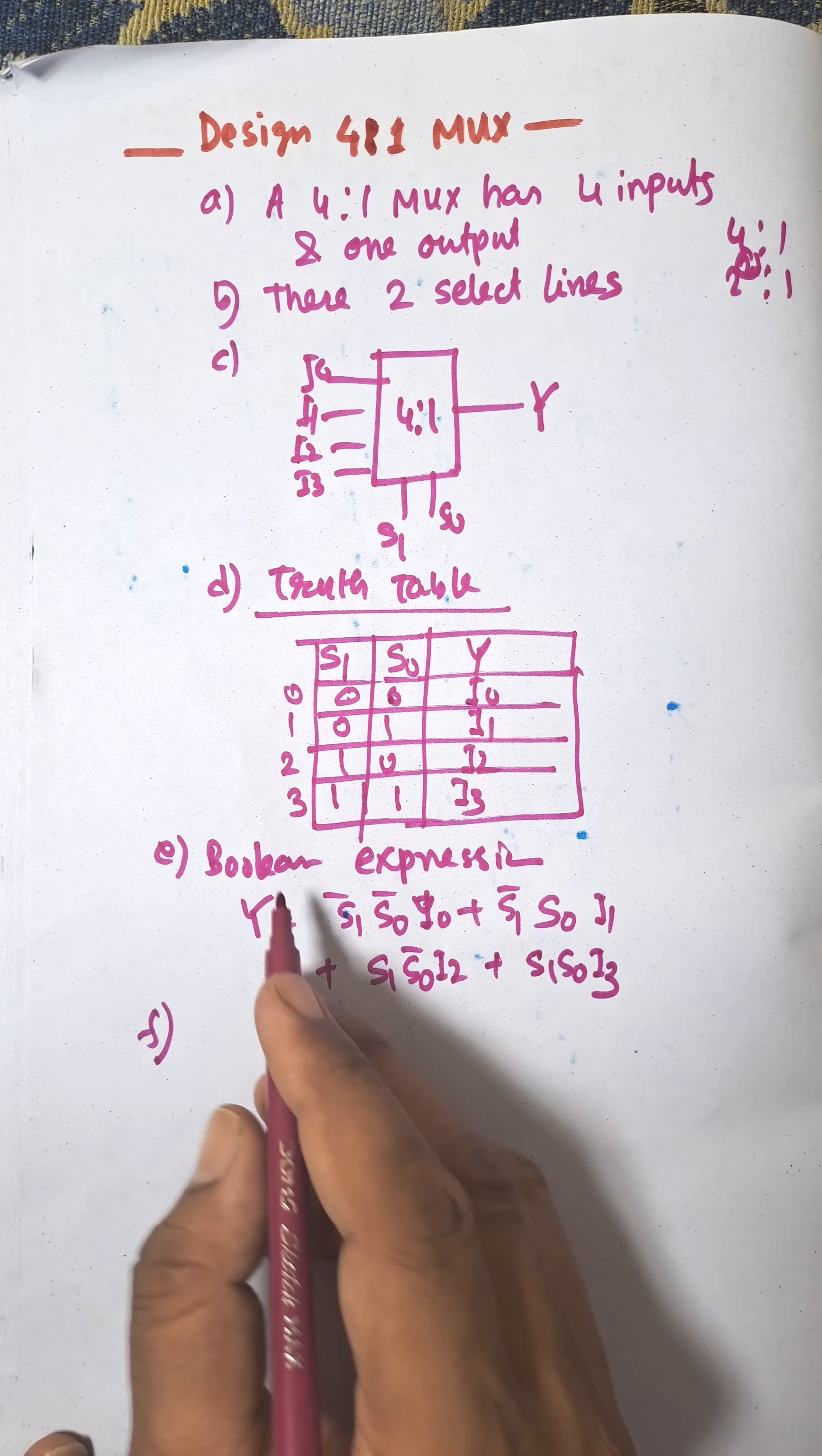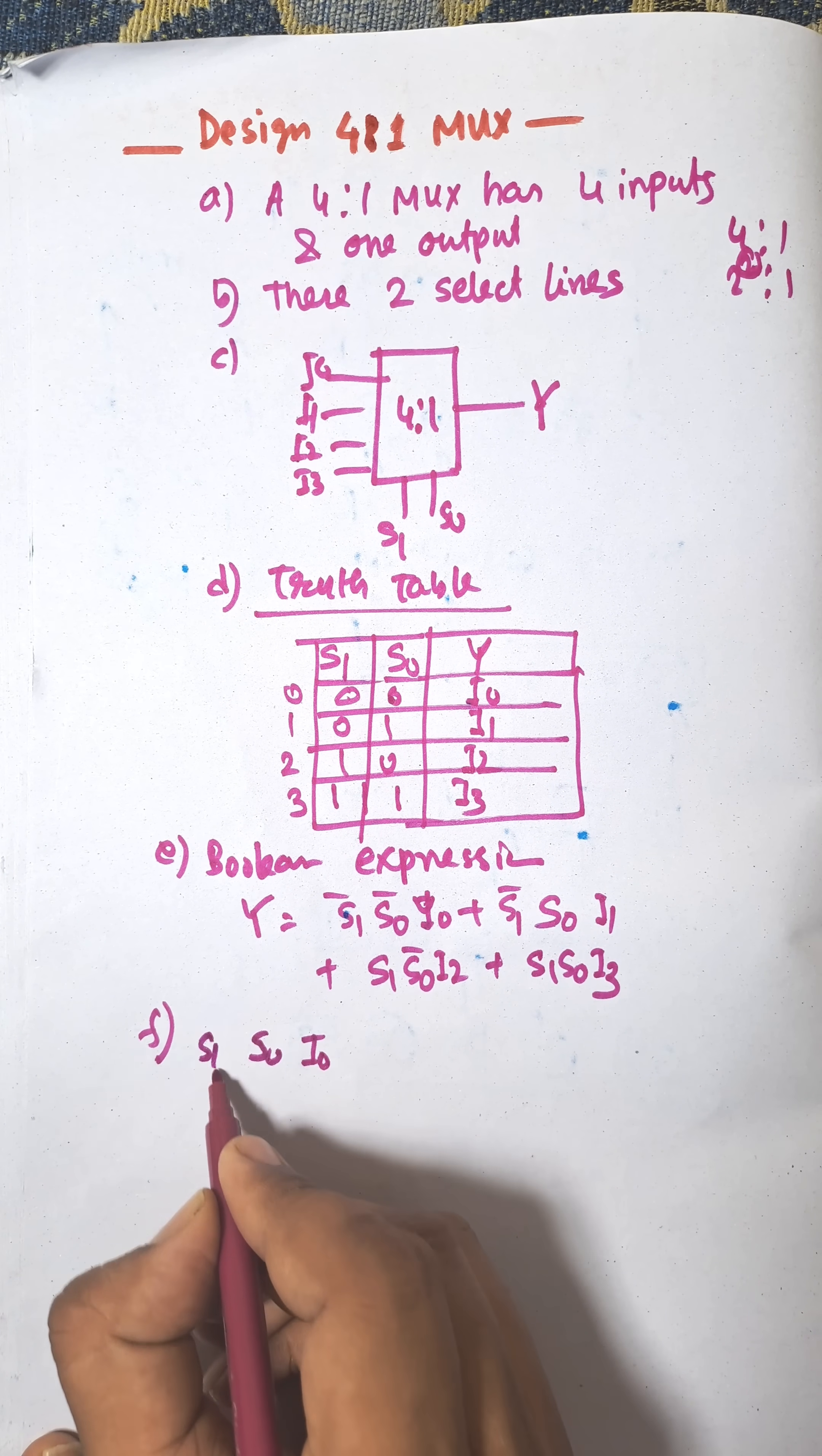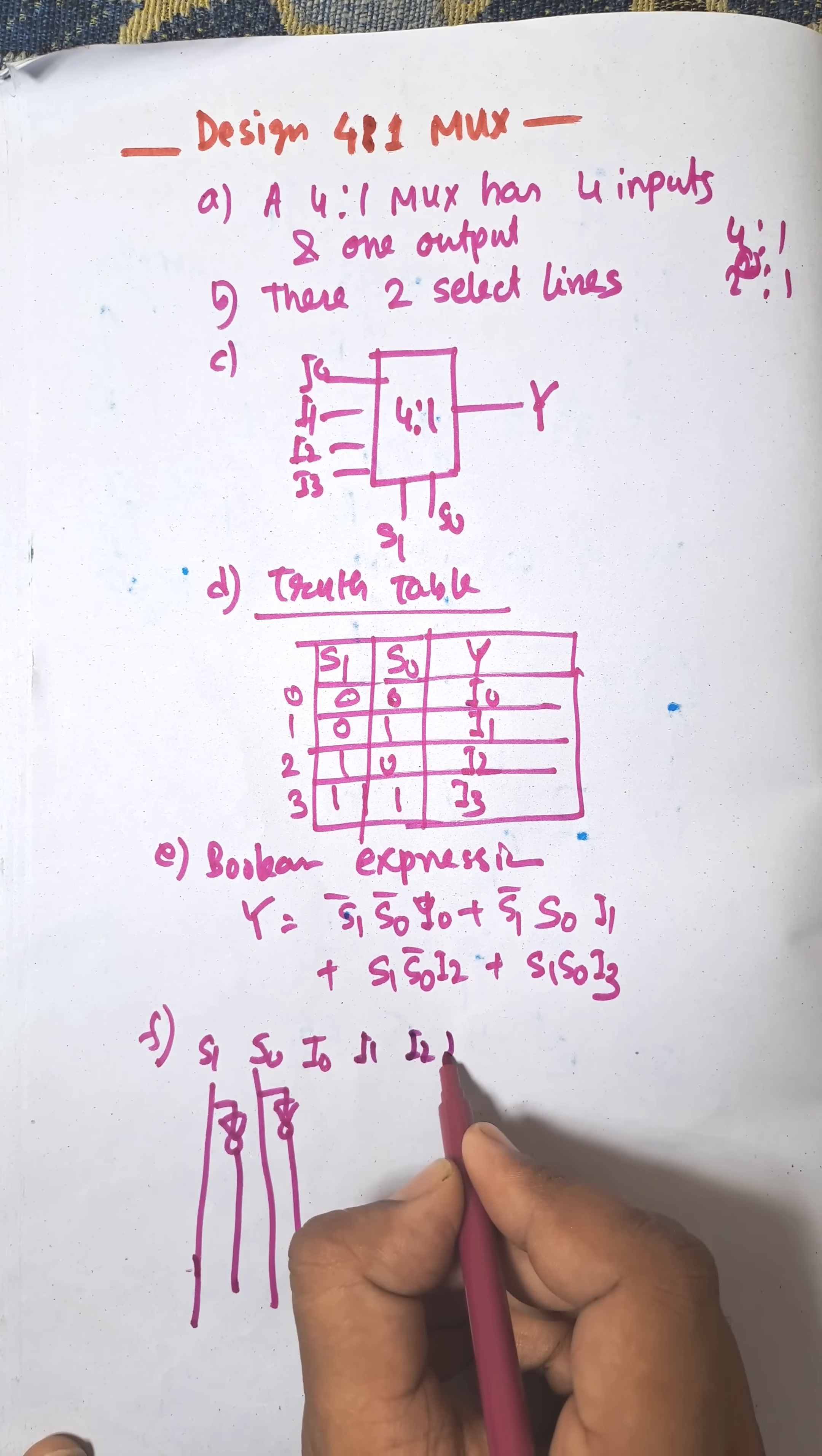The circuit diagram. First of all, I0, this is I0. Taking S0, S1. This is S0, and this is for S0 bar, and this is for S1 bar. First of all, I0, I1, I2, and I3.